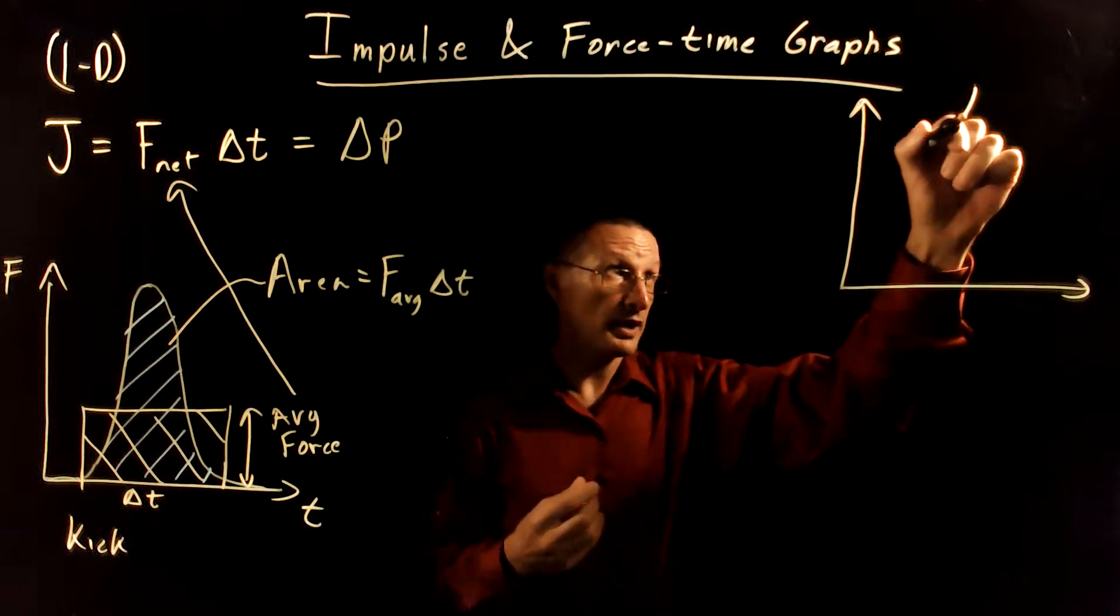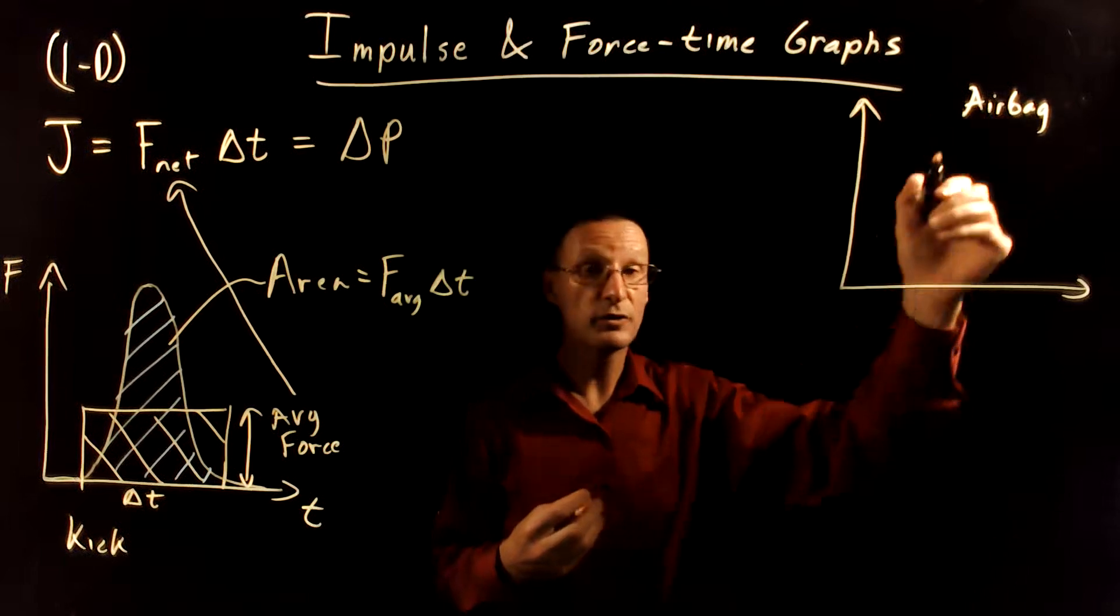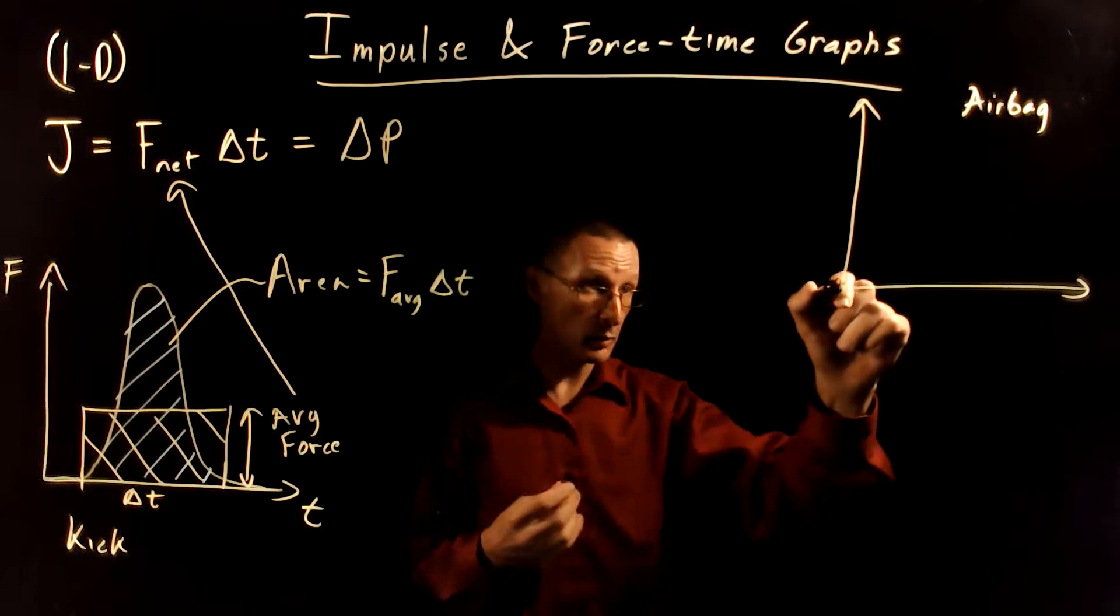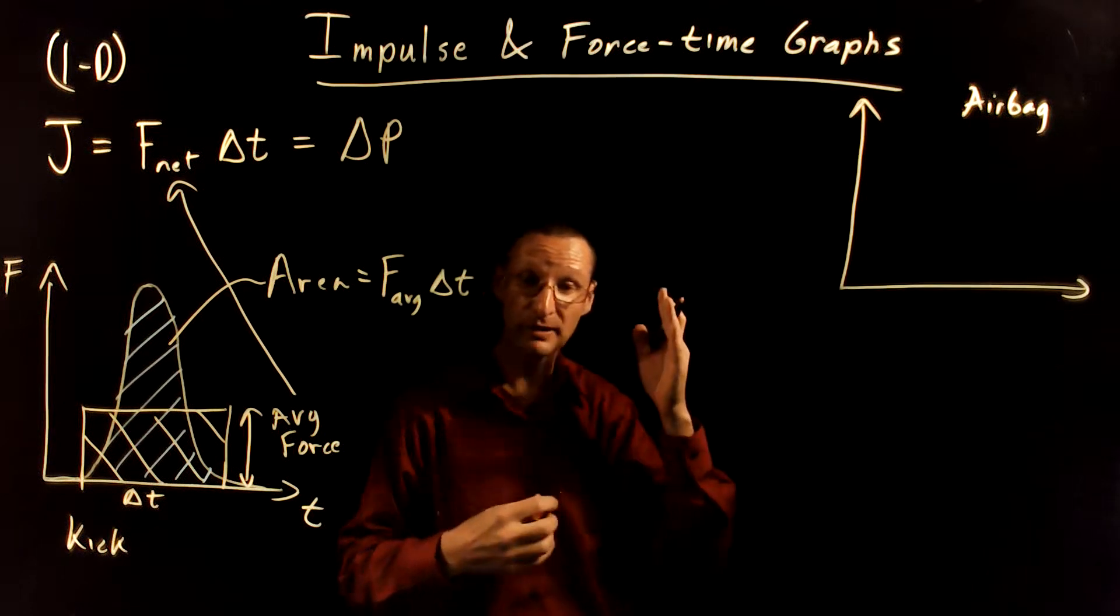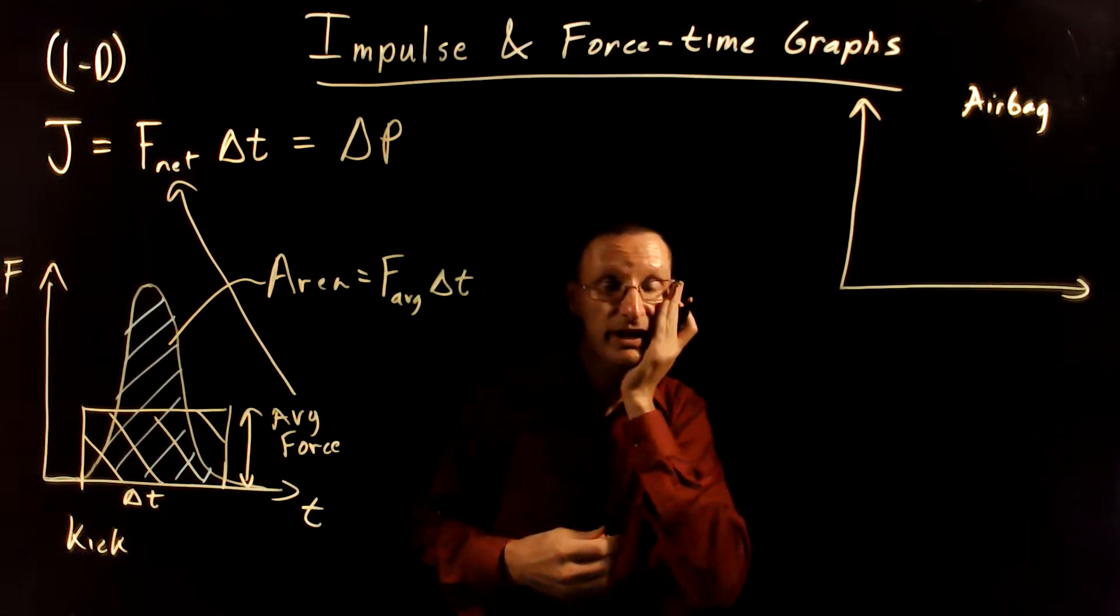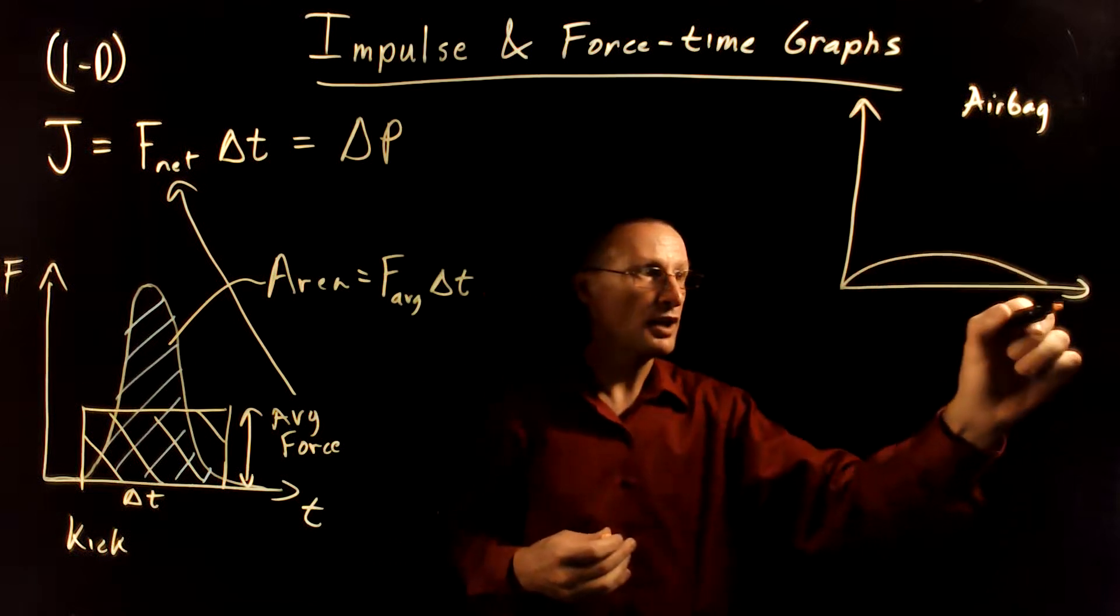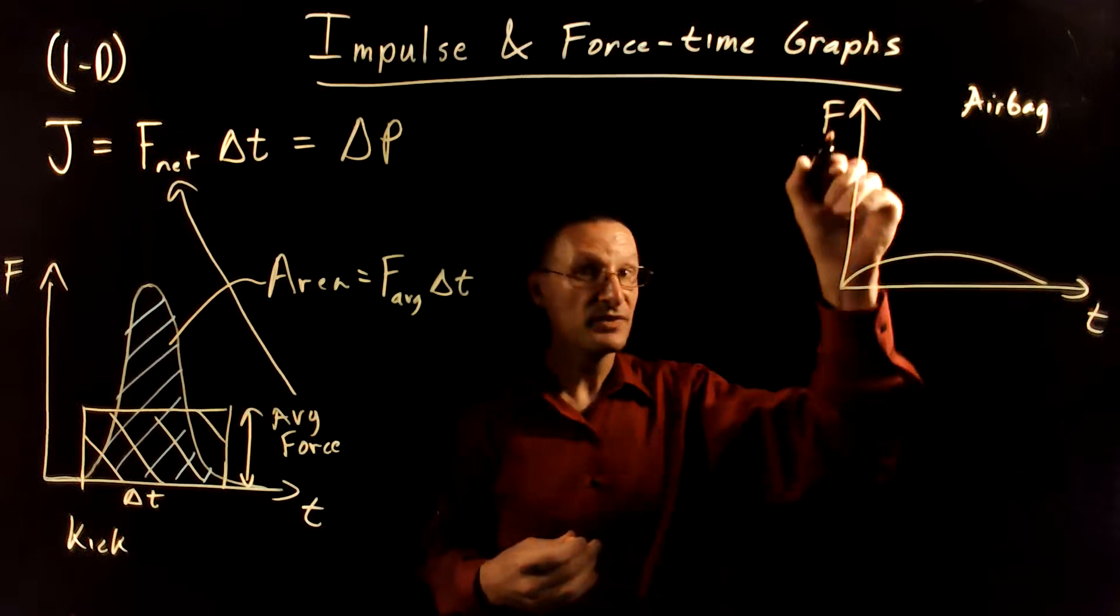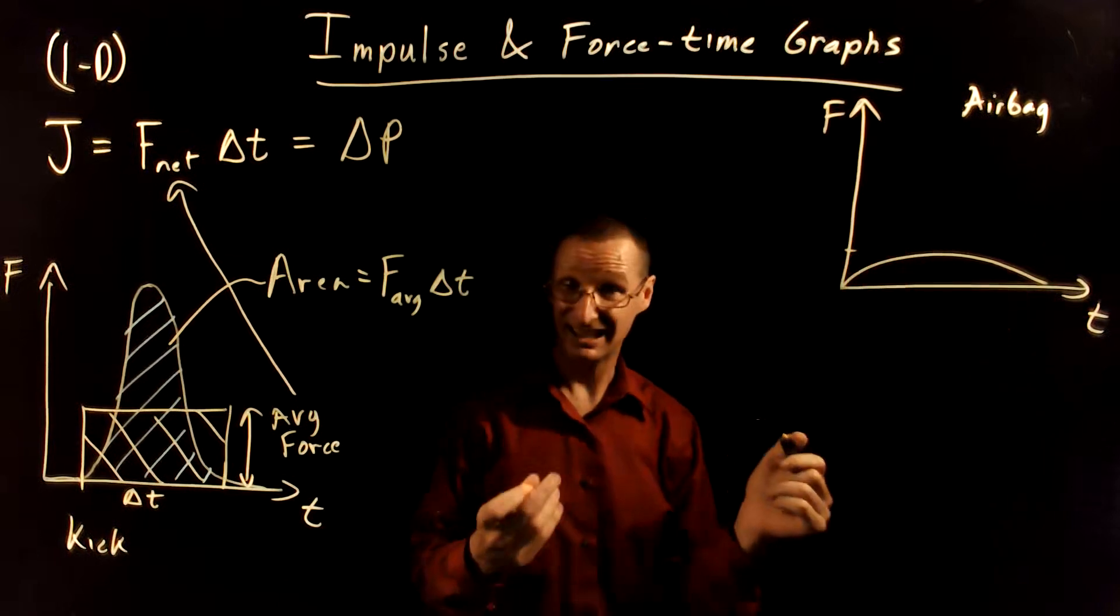In one scenario, the crash test dummy is crashing with an airbag. And so what happens with the airbag is the airbag inflates rapidly. And the crash test dummy's face presses against the airbag. And the airbag stretches the time interval over which the force acts. So it's a very long time interval, which makes the force a lot lower.